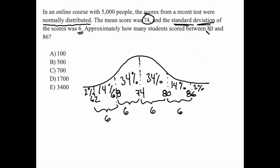And so when they ask us how many students scored between 80 and 86, it's going to be 14% of the people. And 14% of 5,000 is 700.